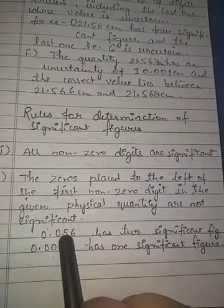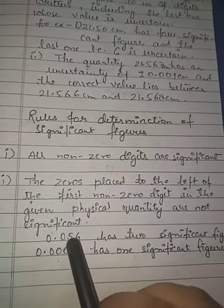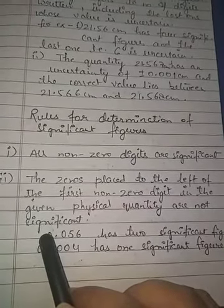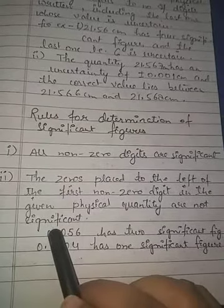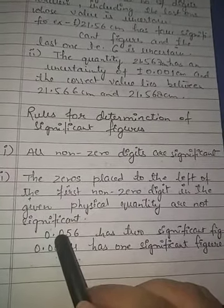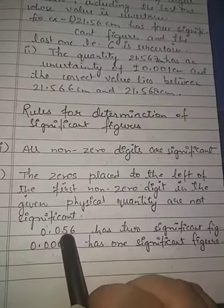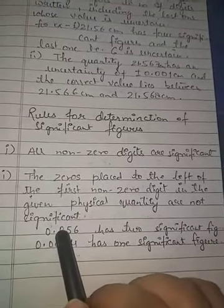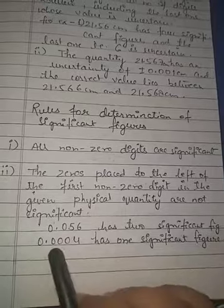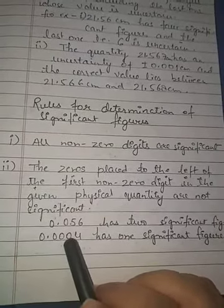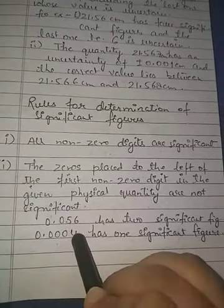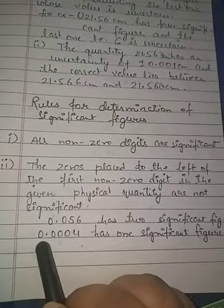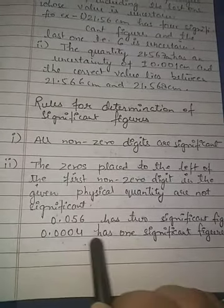Since 5 is the first nonzero digit, all zeros placed to the left of the first nonzero digit in the given physical quantity are not significant. For example, in 0.056, the first nonzero digit is 5, and the two zeros before it are non-significant — it has only two significant figures. Similarly, 0.0004 has only one significant figure, which is 4; all preceding zeros are non-significant.